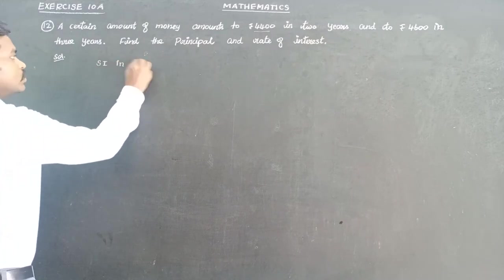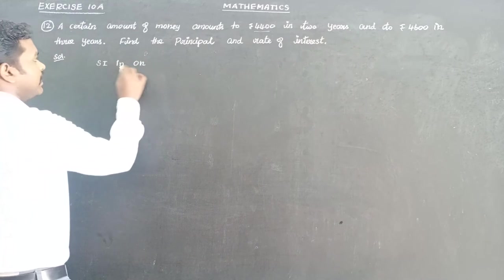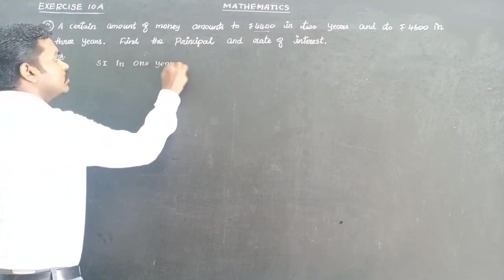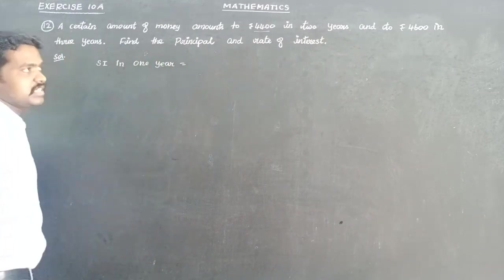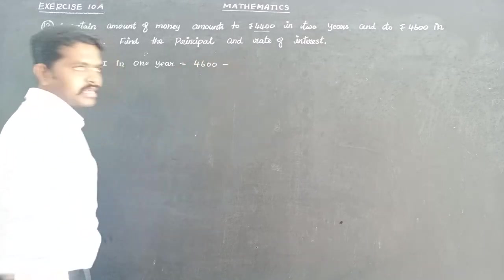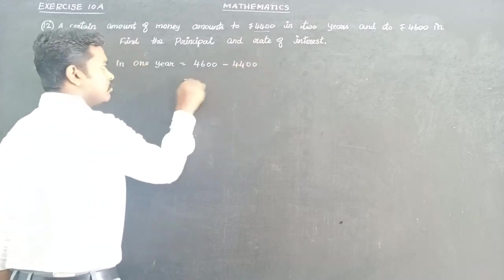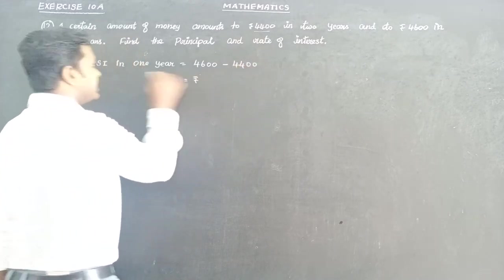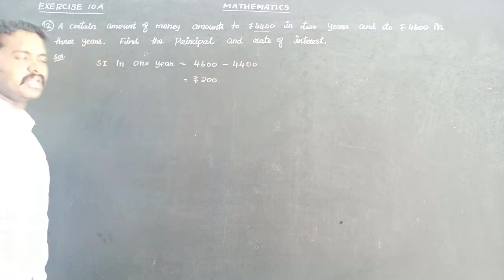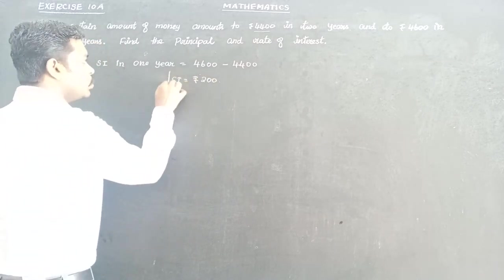So, simple interest in one year is equal to: at the end of the third year the amount is 4,600, and the amount at the end of the second year is 4,400. Subtracting, simple interest for one year is equal to 200.